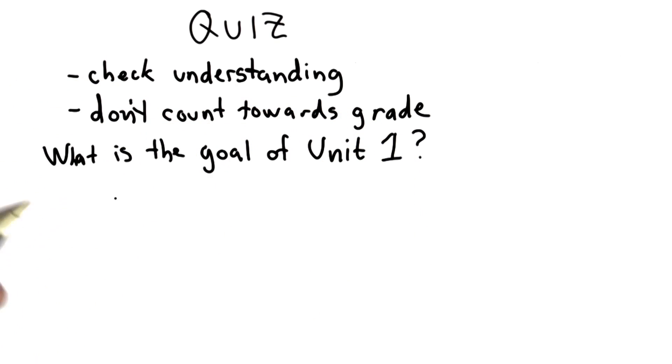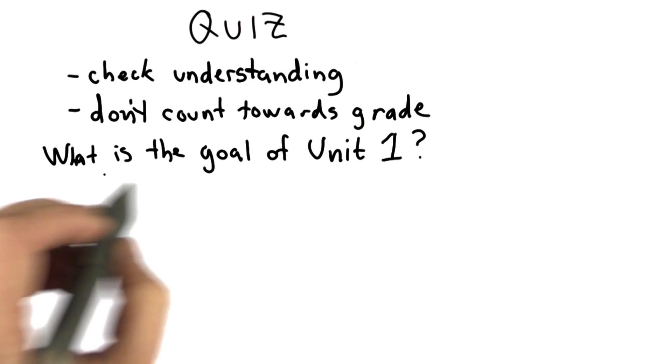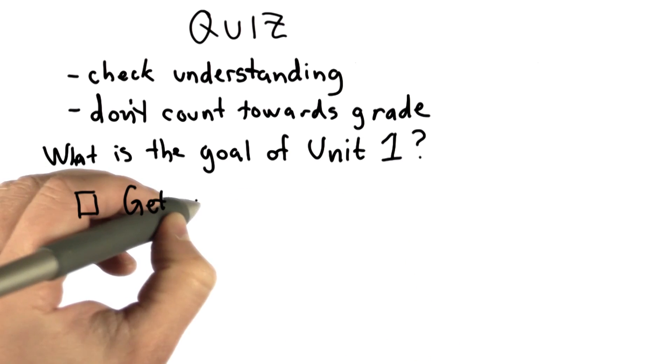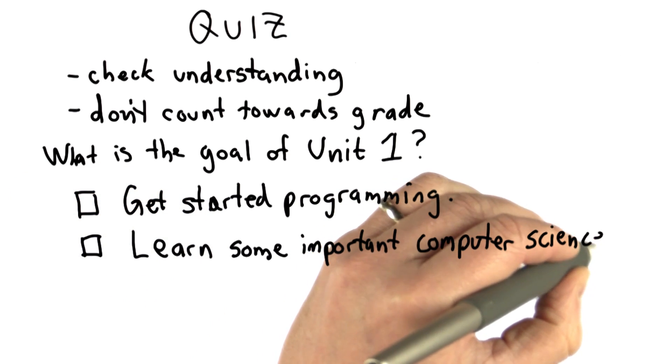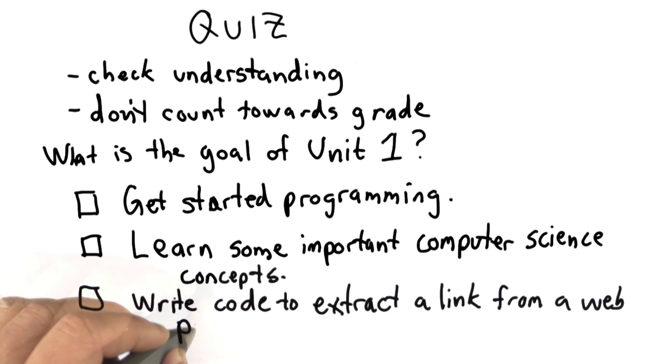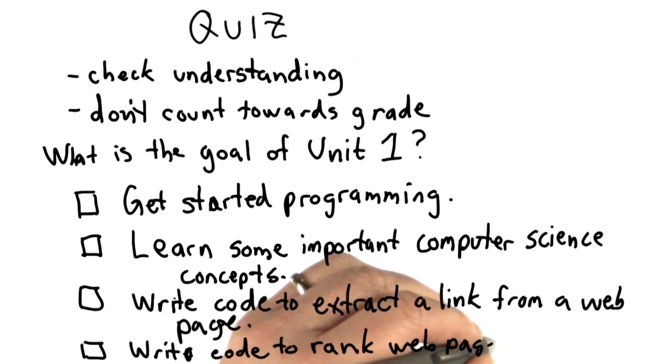There are four choices. You can check all the choices that you think are good answers. The first is to get started programming. The second choice is to learn some important computer science concepts. The third choice is to write some code that extracts a link from a web page. And the fourth choice is to write code to rank web pages.